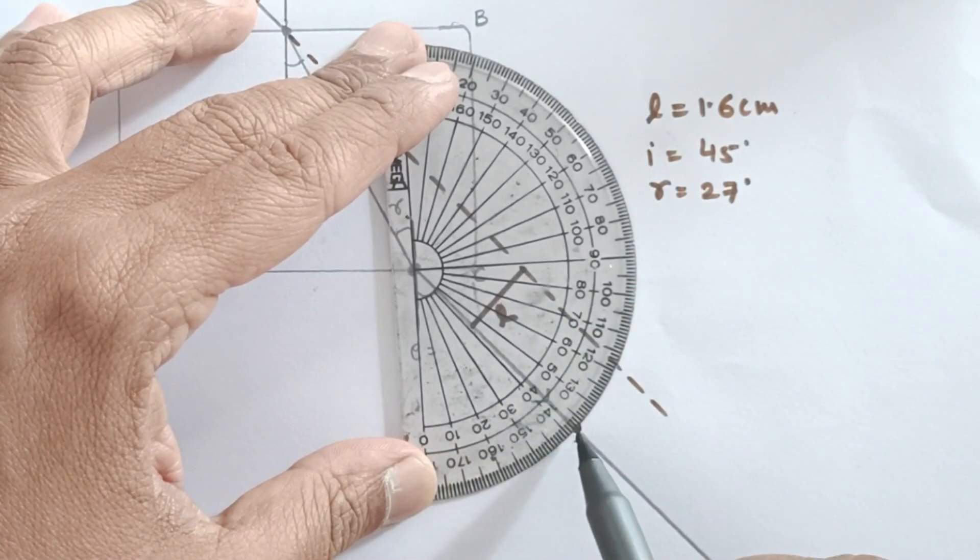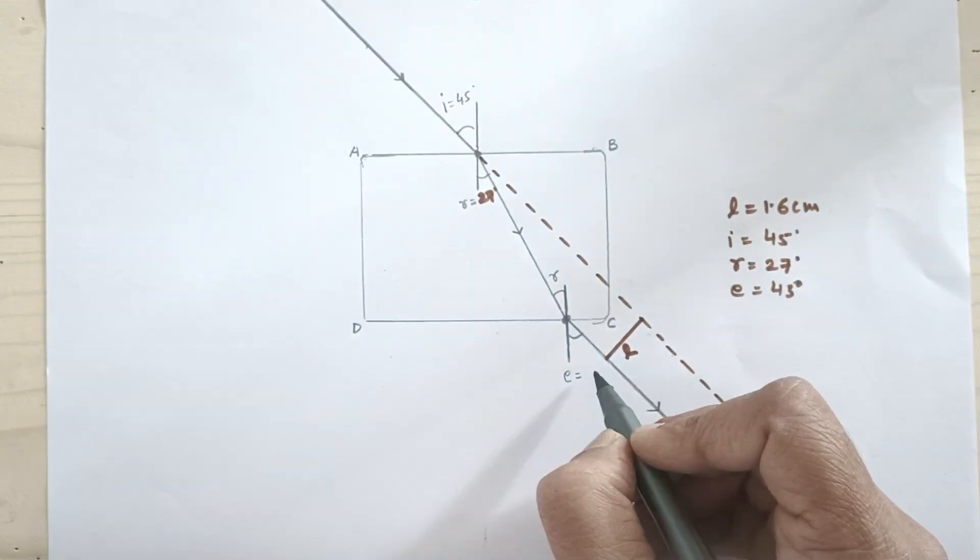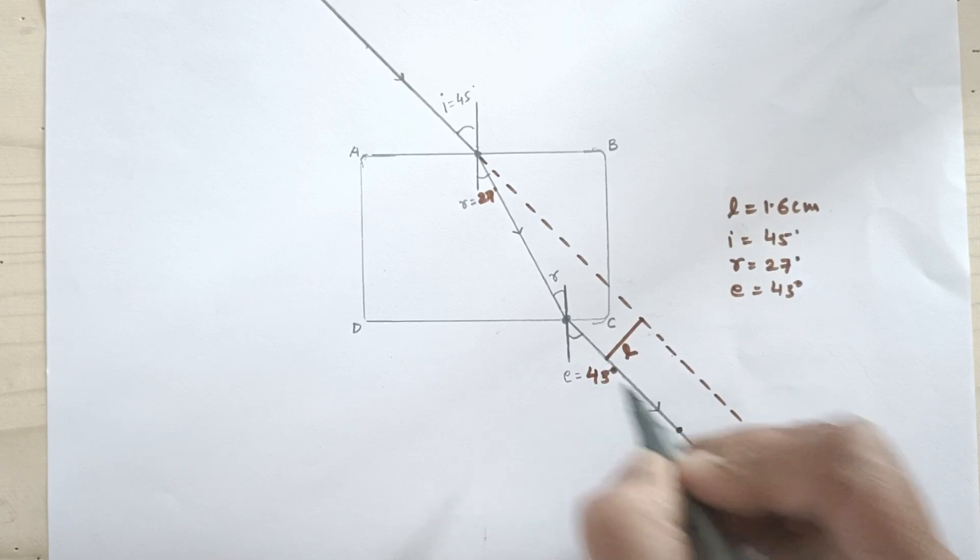Refractive index of the glass slab can also be found out by using Snell's law. Substitute these given values into the equation and get the answer.